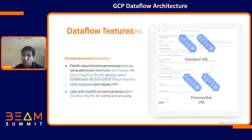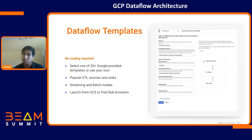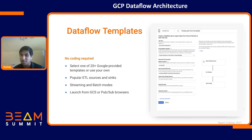Dataflow templates are one of our newer releases. There's no coding required — you just specify things like your sources and sinks, stage the template, and launch the job from it. We have two types: classic templates and flex templates. In both, the code doesn't have to get recompiled every time, so launching is faster. The difference is that in classic templates, the job execution graph is created during the staging phase, whereas in flex templates, the graph is created when you actually launch the pipeline, giving you more flexibility to edit sources, sinks, and other pipeline details.